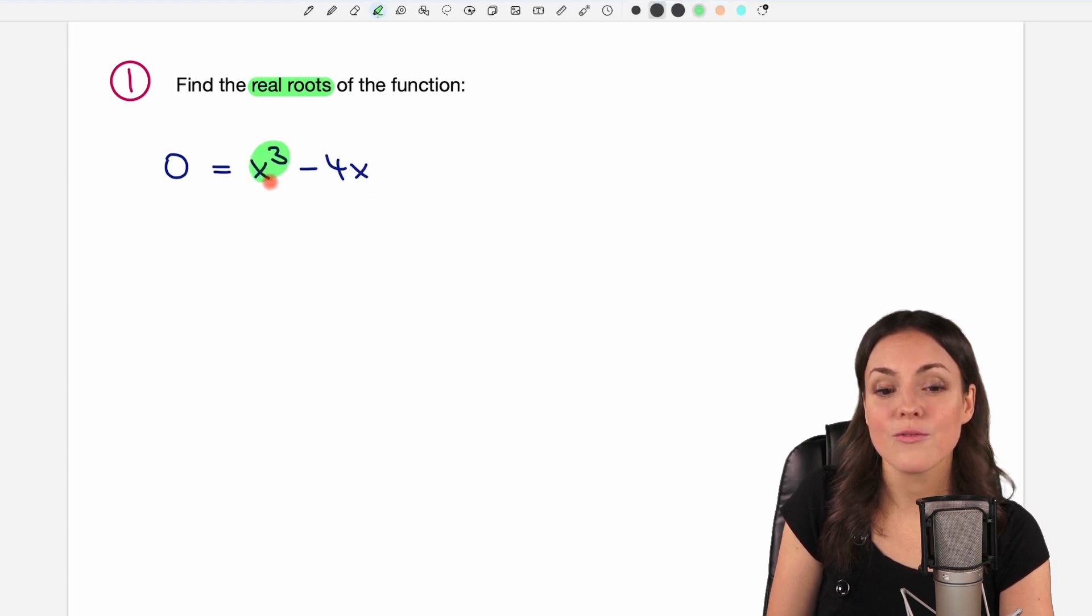We have x to the power of 3 in here, which is something that scares some people probably. But the good thing is that in the second part here, we also have an x. So we have x in both parts. So we can extract x.